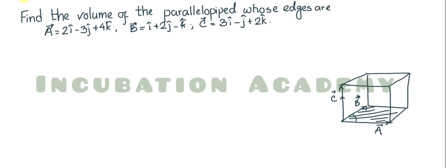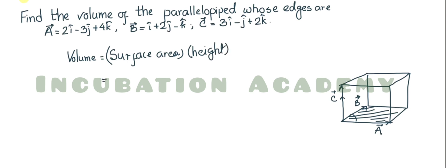If we take the dot product of the area and the height vector, we can get the volume — because area is a vector quantity but volume is a scalar quantity. So the volume equals the surface area (a cross b) dotted with c, the height vector. Therefore, a cross b dot c gives us the volume of the cuboid.